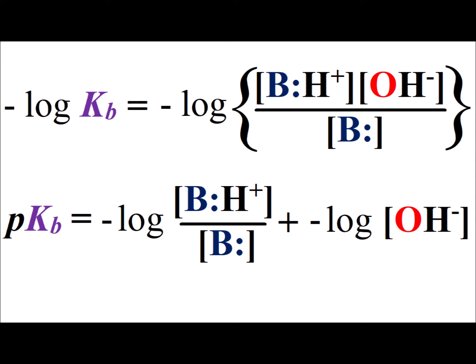We note that, by definition, the pKb is the negative log of the Kb, so therefore we make that substitution. We also use the properties of the logarithm to break up the logarithmic expression on the right-hand side as the sum of two logs.